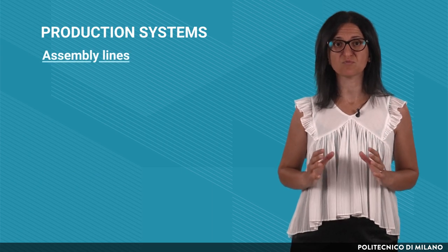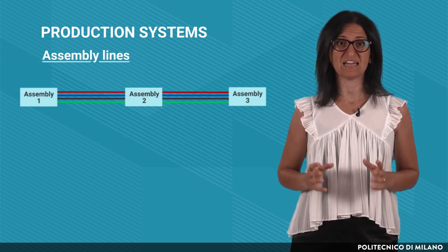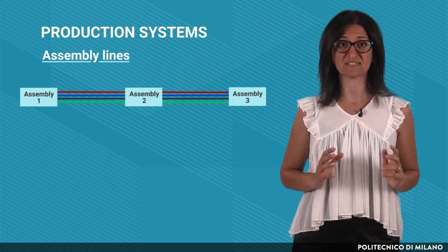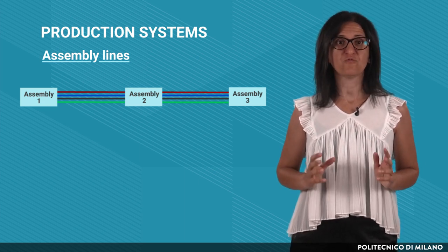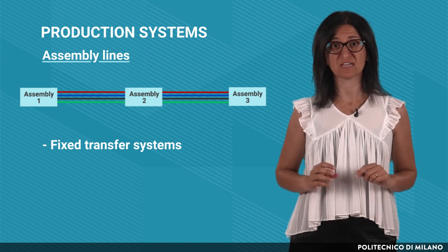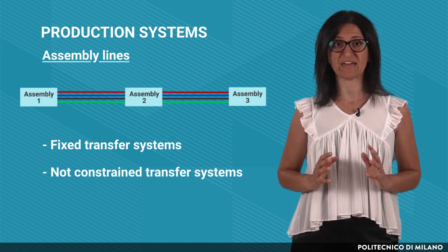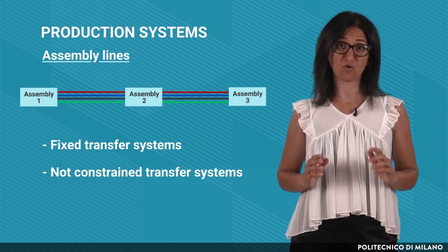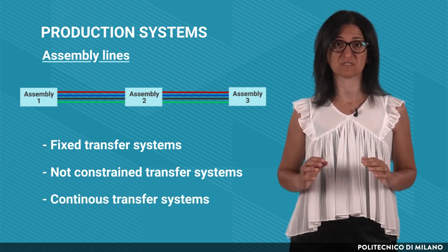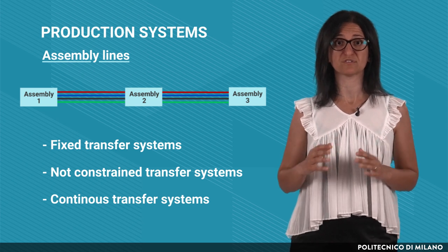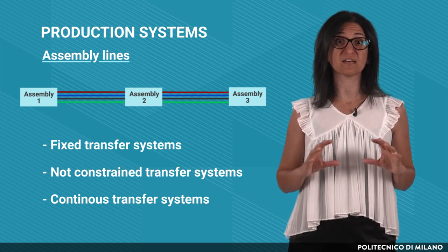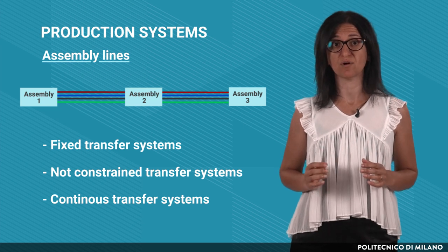In assembly lines, all the products go through the same stations. In each station, a specific set of activities is performed. Based on the type of transport between the stations, we can distinguish fixed transfer systems, in which the products move from one station to another at fixed times using a line belt; not-constrained transfer systems, in which there are small buffers containing work in progress between the stations; and continuous transfer systems, in which the products slowly move through the stations without stopping. The workers carry out the required operations while the product is moving. This solution is quite common in the automotive industry.